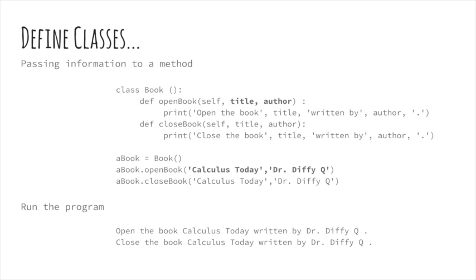The new parameters and arguments are highlighted in bold-faced font. The messages that are printed are: Open the book, Calculus Today, written by Dr. Diffie Q. Followed by: Close the book, Calculus Today, written by Dr. Diffie Q.